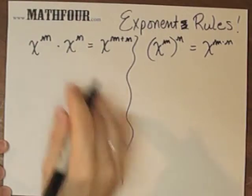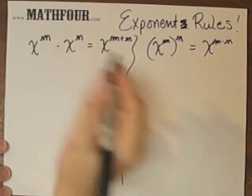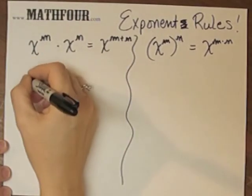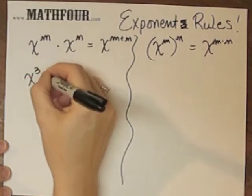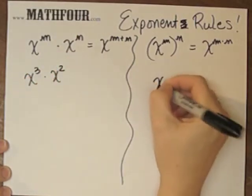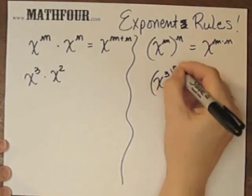So my super memory trick is to remember, first of all I use the numbers 3 and 2. So I do x to the 3rd times x squared, and x to the 3rd squared.